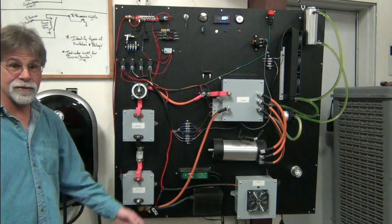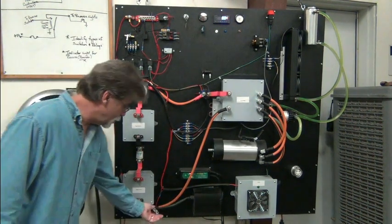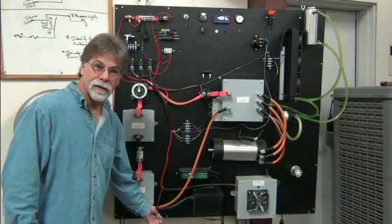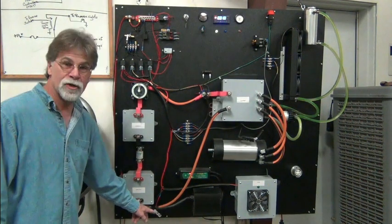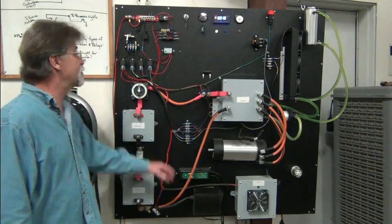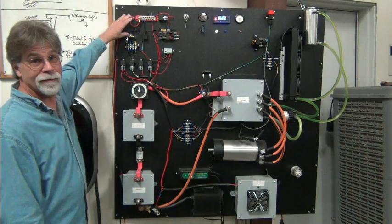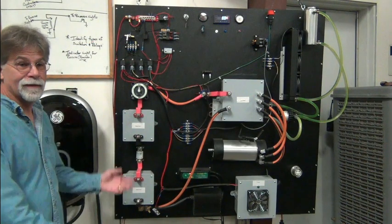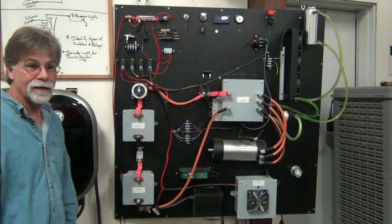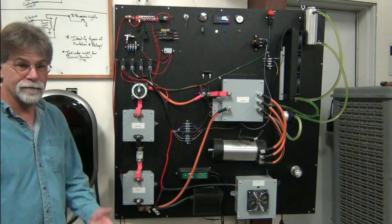It converts that traction pack voltage to 13.8 to 14.6 volts DC right here, which would then be connected back to our traction pack battery and be charging it. Whenever the ignition's on, it's charging our 12 volt battery and sharing the 12 volt load.